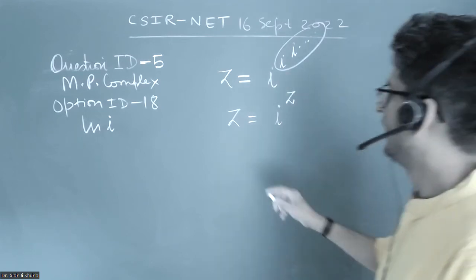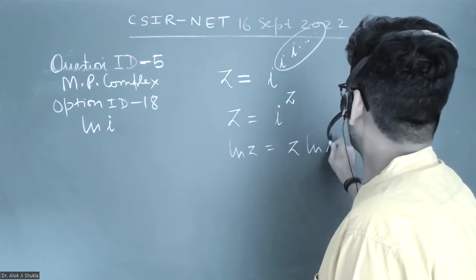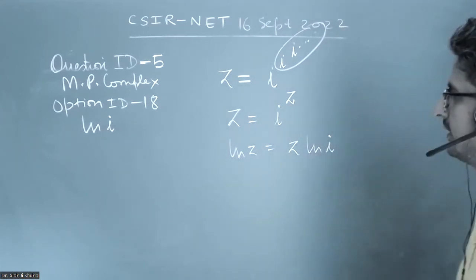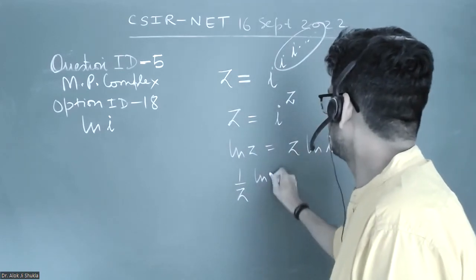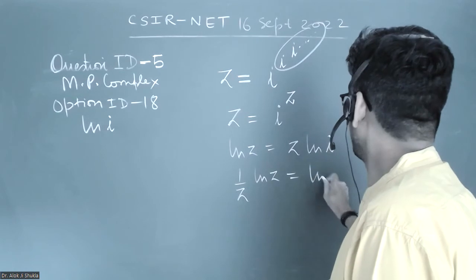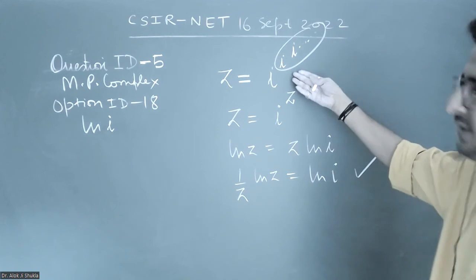Now I will take log of z. It will become z equals log of iota. They have asked in the question what is the value of 1 by z times ln z, so that will be simply ln of iota. This is the answer. Very simple question, just a small trick.